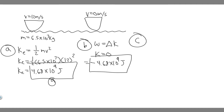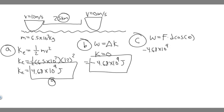Let's move on to part C: what is the magnitude of the constant force required to stop it as it undergoes a displacement of 2.5 kilometers? We know the work formula: work equals force times distance times cosine of theta. We know the work is 4.68 times 10 to the 9 joules. The distance is 2.5 kilometers, which we need in meters: 2.5 times 1,000 is 2,500 meters. Then we multiply by cosine of theta.